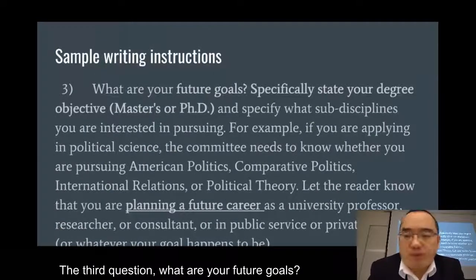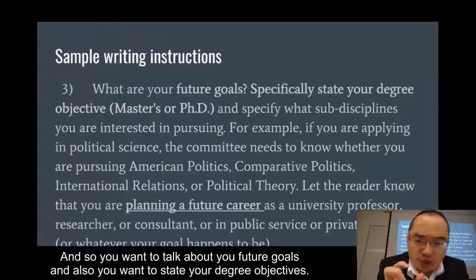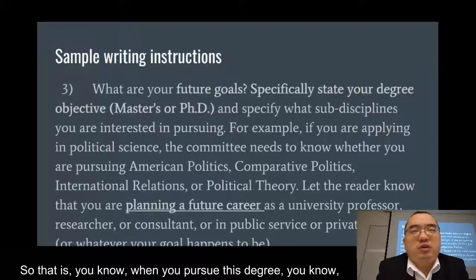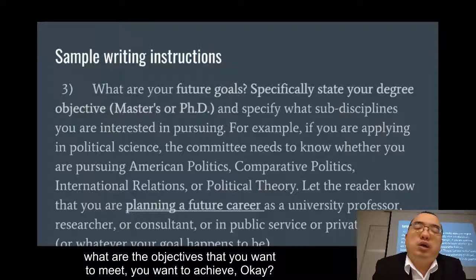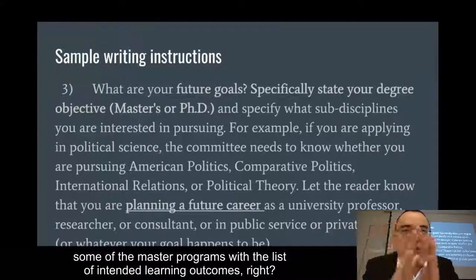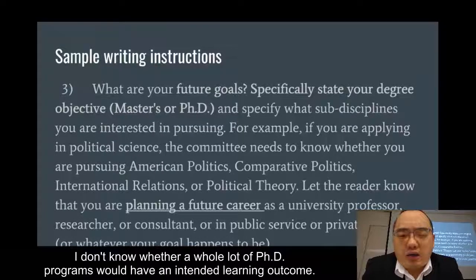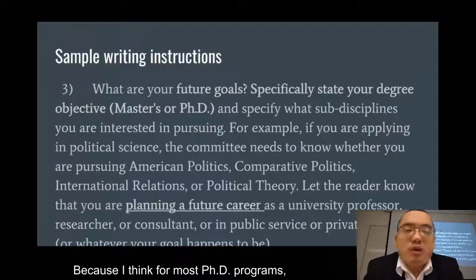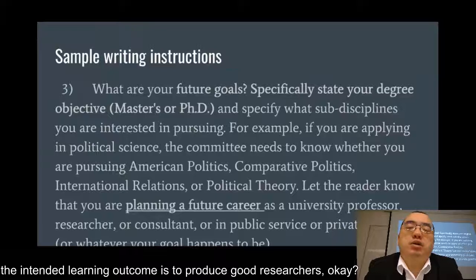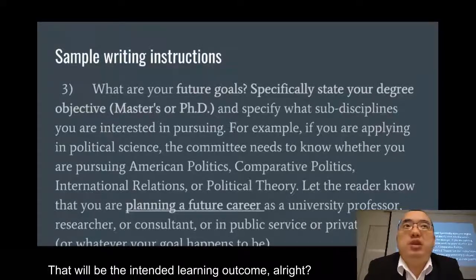The third question is: what are your future goals? You want to talk about your future goals and state your degree objectives — when you pursue this degree, what are the objectives you want to meet and achieve? For most PhD programs, the intended learning outcome is to produce good researchers — you will have a very good thesis and a few good papers published. You want to specify a sub-discipline — a keyword is sub-discipline. Don't just say you're interested in chemistry or Chinese literature; look at a specific area within that discipline.